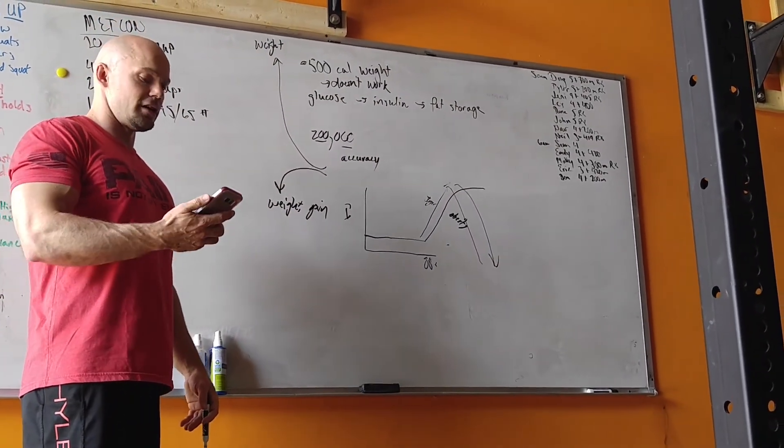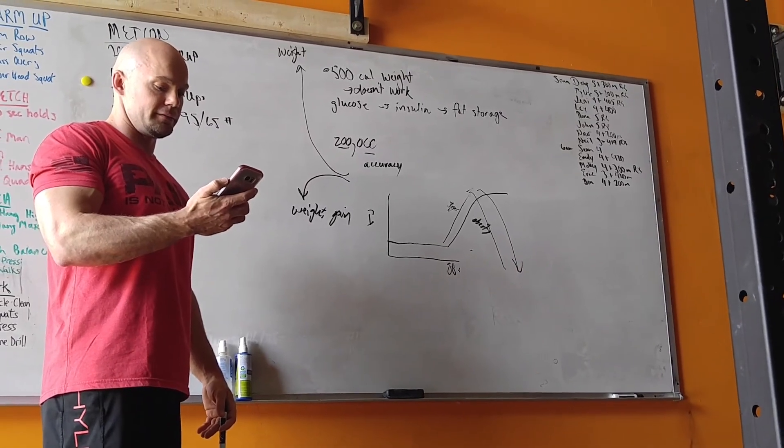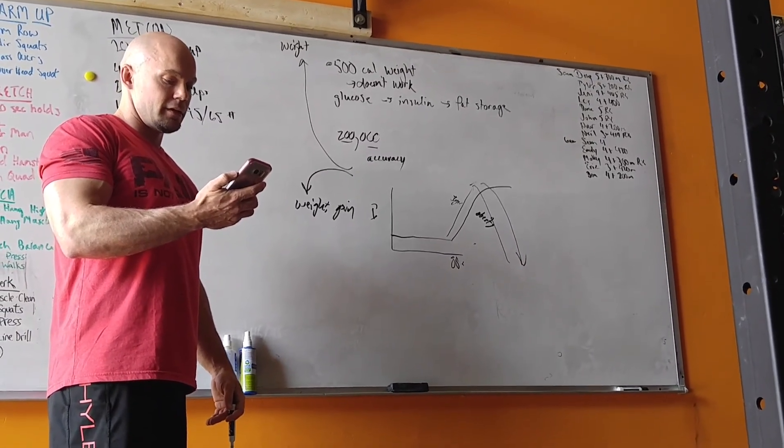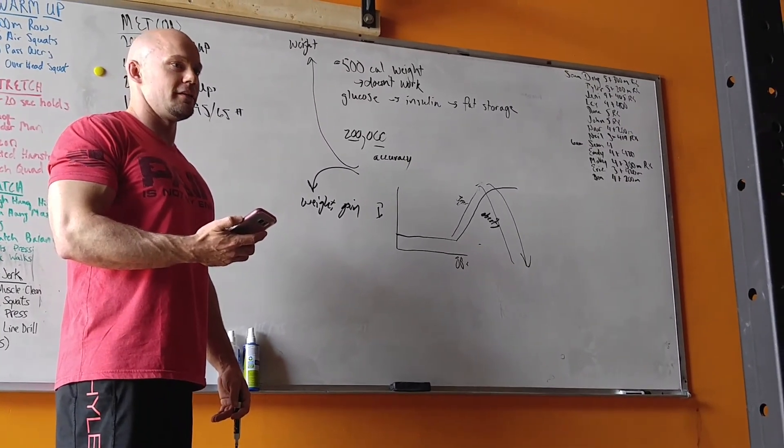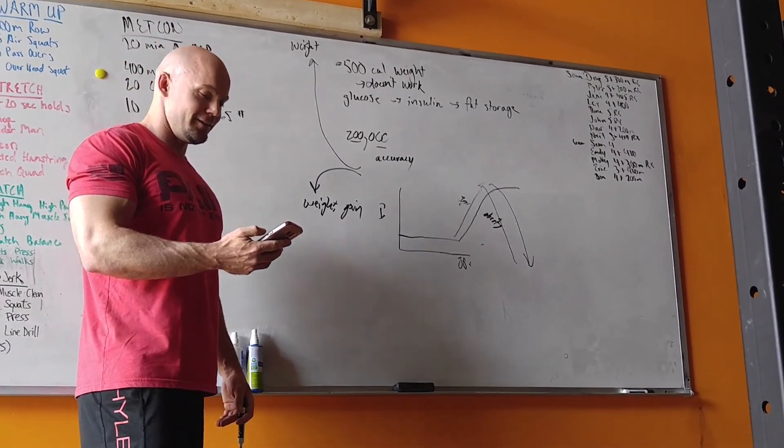And that's why big sugar companies are fighting this tooth and nail. I went on a huge long run, 400 tangents there. Did anybody keep up with that? All right, good. Thank you.